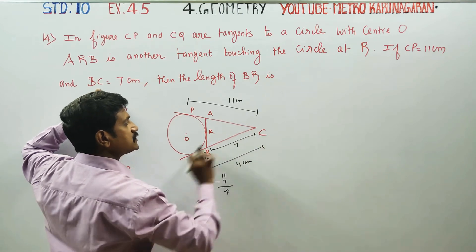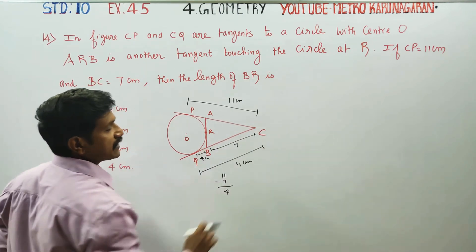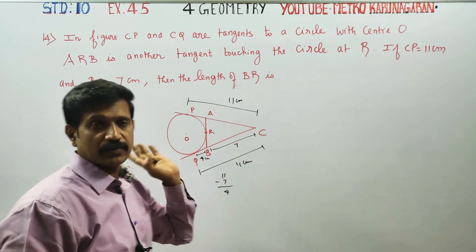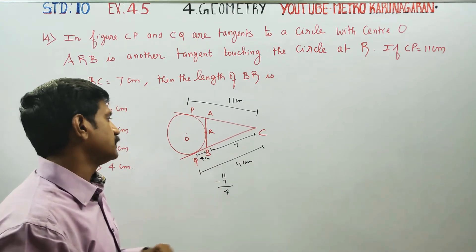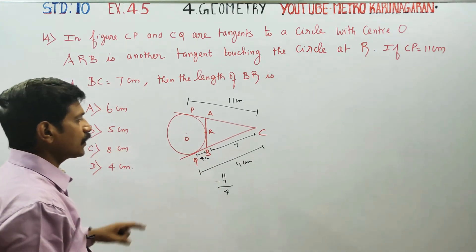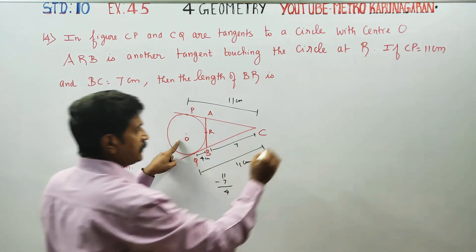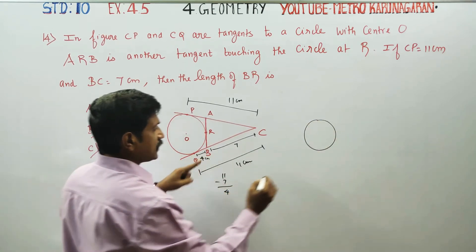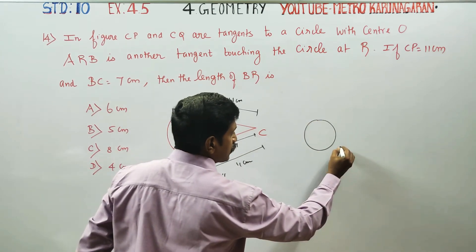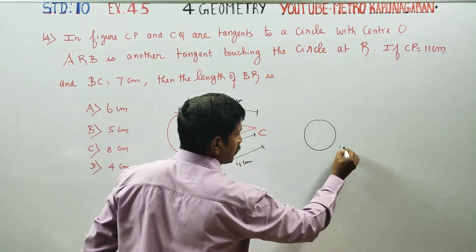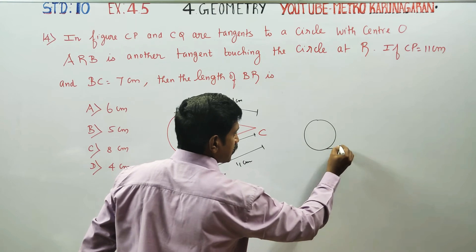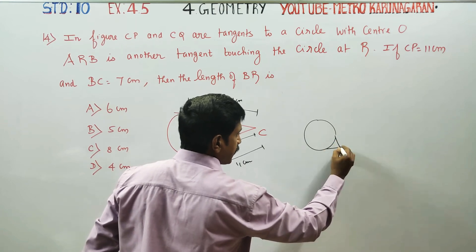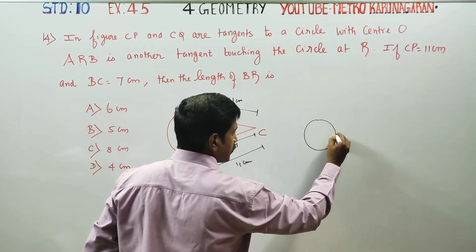This value is equal to 8. Now, this is 4. B is one point and here is one point — 2 points, 2 tangents.